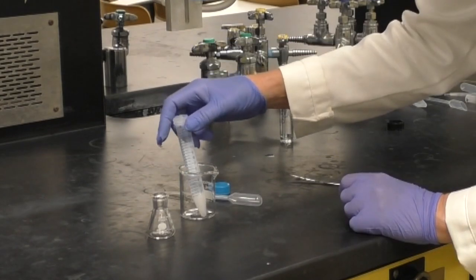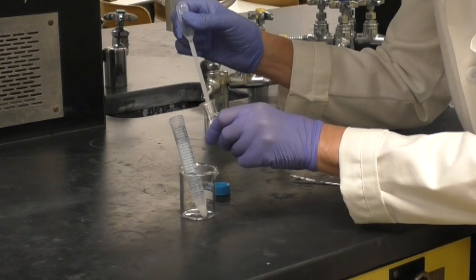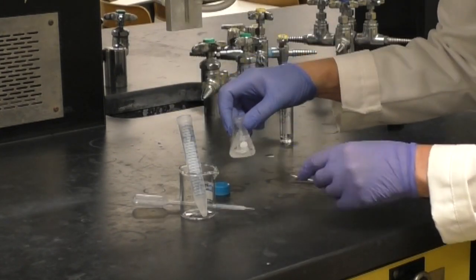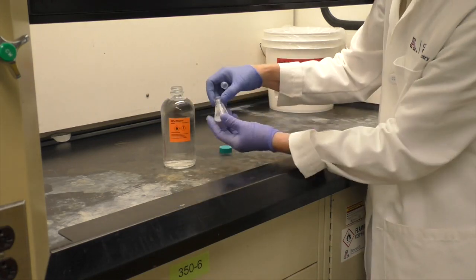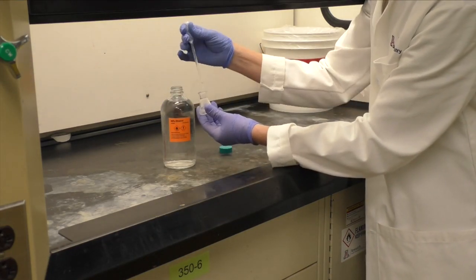Once the mixture is separated, transfer the organic layer, again that will be the bottom layer, to a 10 milliliter Erlenmeyer flask. Add 2 to 3 milliliters of 95% ethanol to the flask.